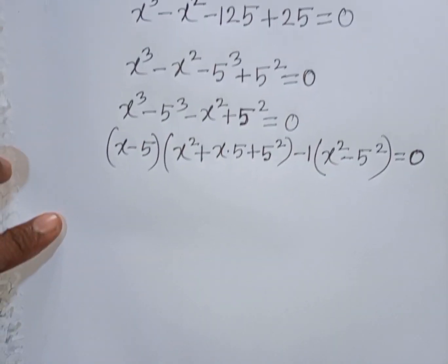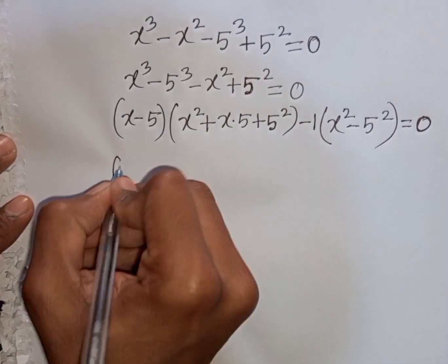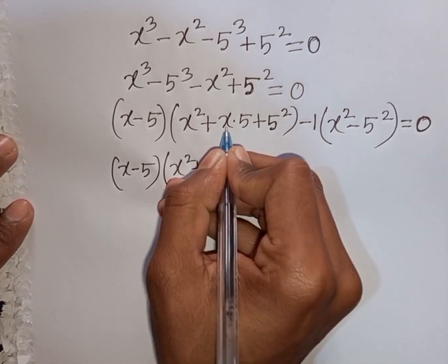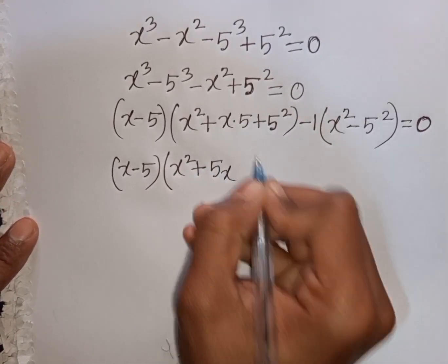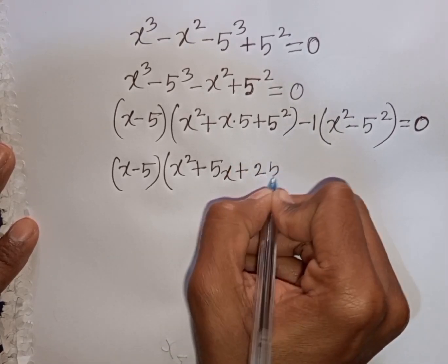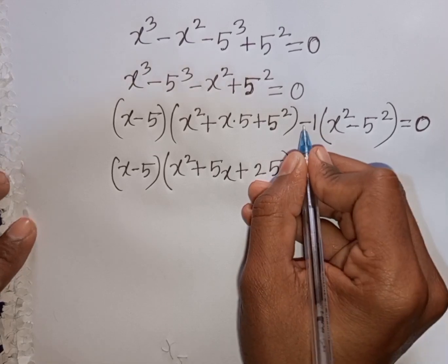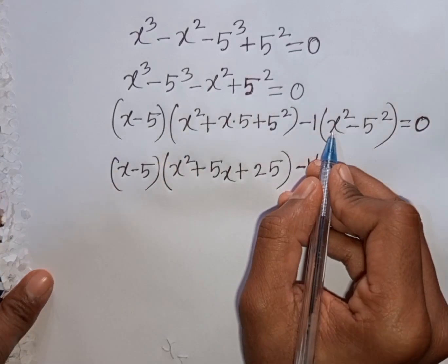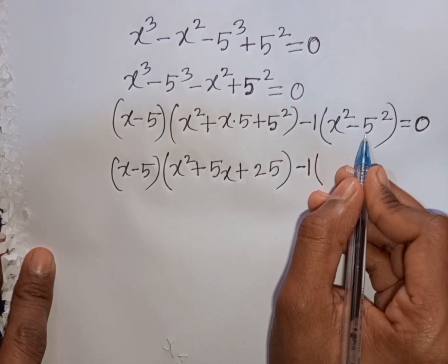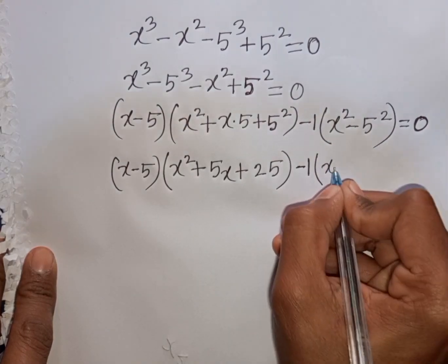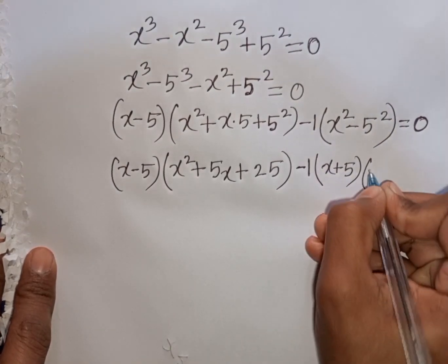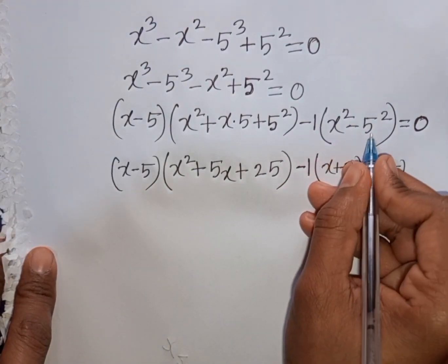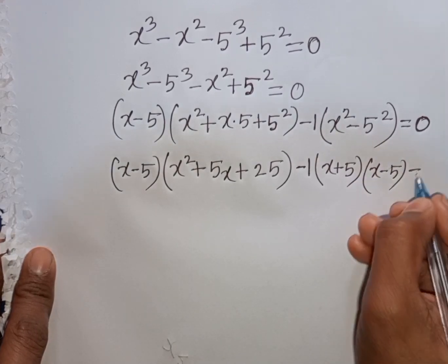So we have (x - 5)(x² + 5x + 25), then minus 1 times (x² - 5²) = 0. I apply the formula of a² - b², where a is x and b is 5. According to the formula, x² - 5² = (x + 5)(x - 5).